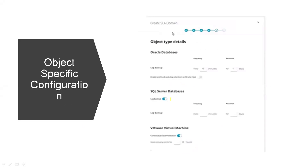Next, object-specific configurations. If we select SQL as the object type, we should select SQL log retentions. If we select Oracle databases, we should select archive log retentions and frequencies. If we select VMware virtual machines, there is an optional continuous data protection setting where we can also select the frequency.